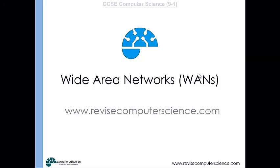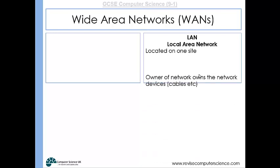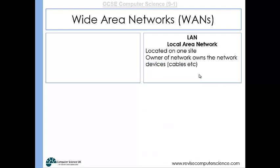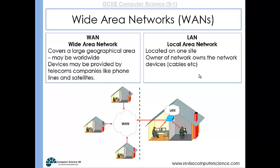This video will take a look at Wide Area Networks, also known as WANs. In the previous video we looked at local area networks and we learned that they were covering a small geographical area and that the owner of the network will own all of the devices and all the cabling on that network. With a wide area network, WANs cover large geographical areas and often much of the infrastructure is actually owned by third party companies like telecommunication companies that might provide phone lines and satellites.